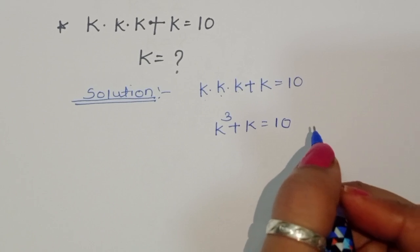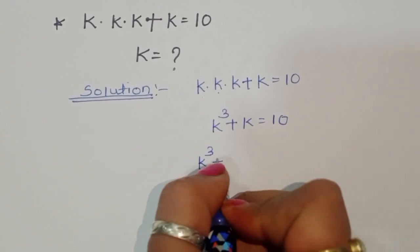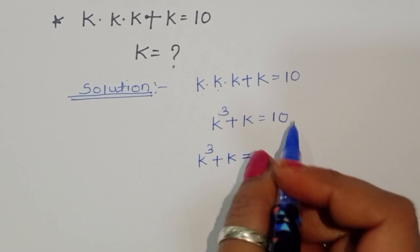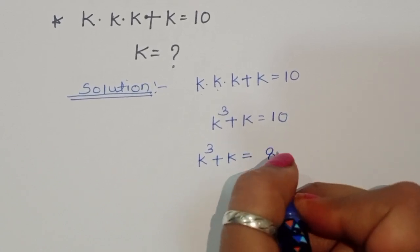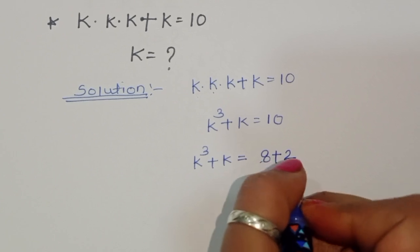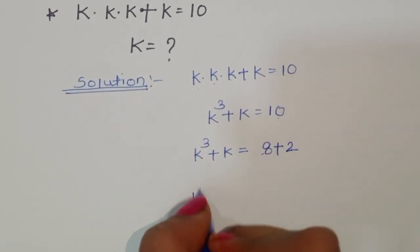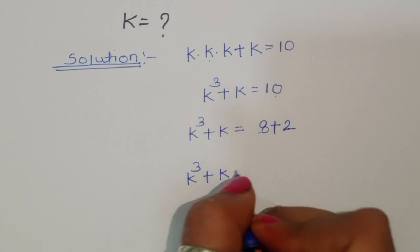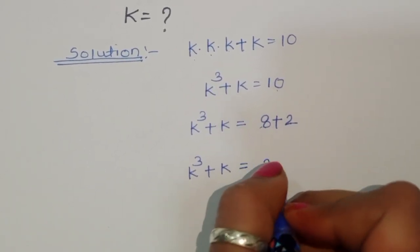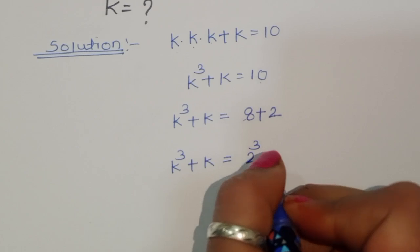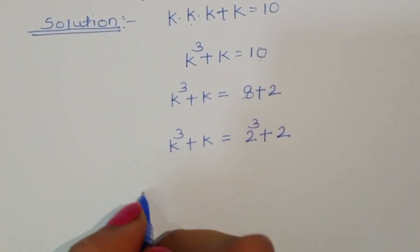Now k cubed plus k equals 10. We can write 10 as 8 plus 2. And we observe that 8 is 2 cubed, so k cubed plus k equals 2 cubed plus 2.